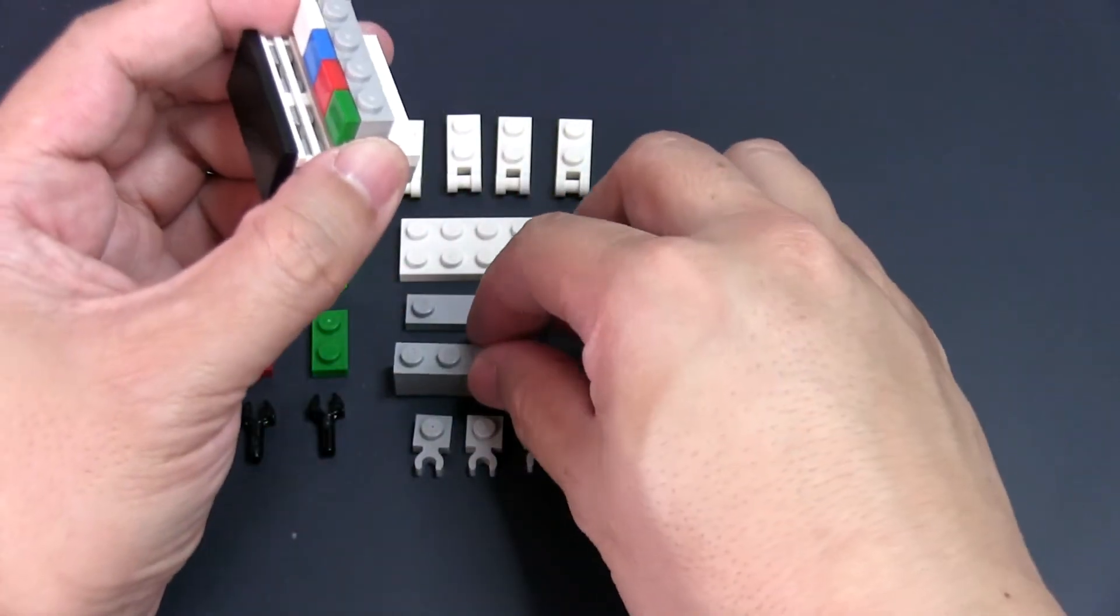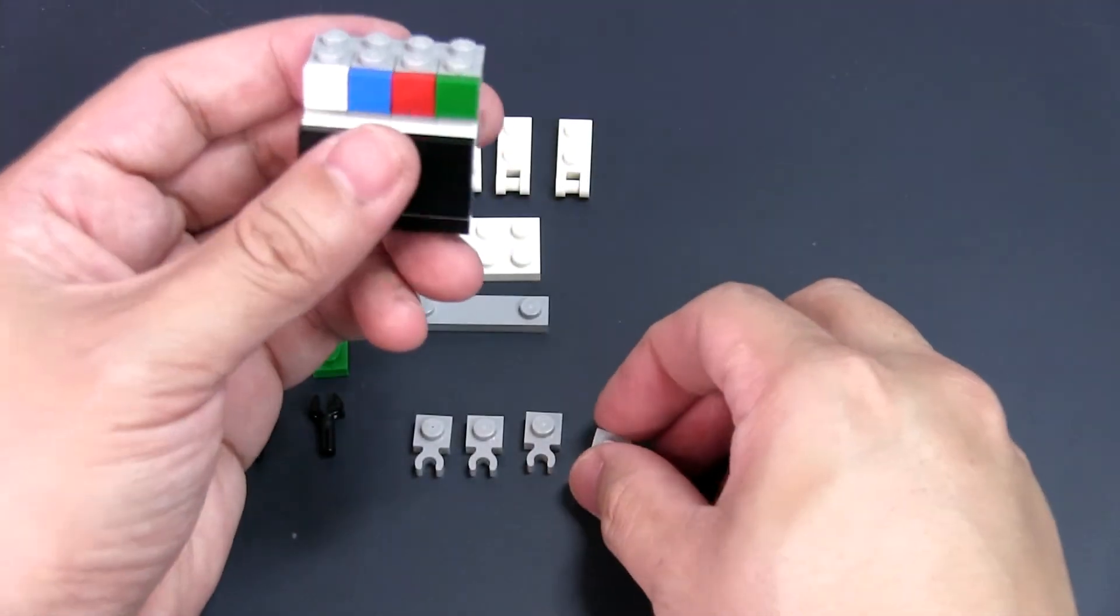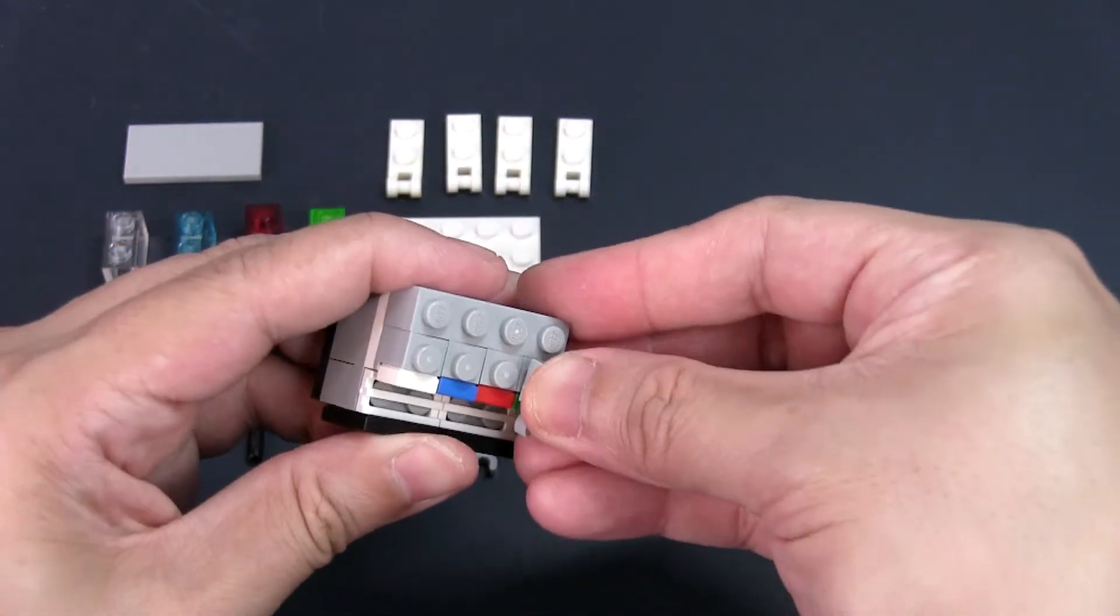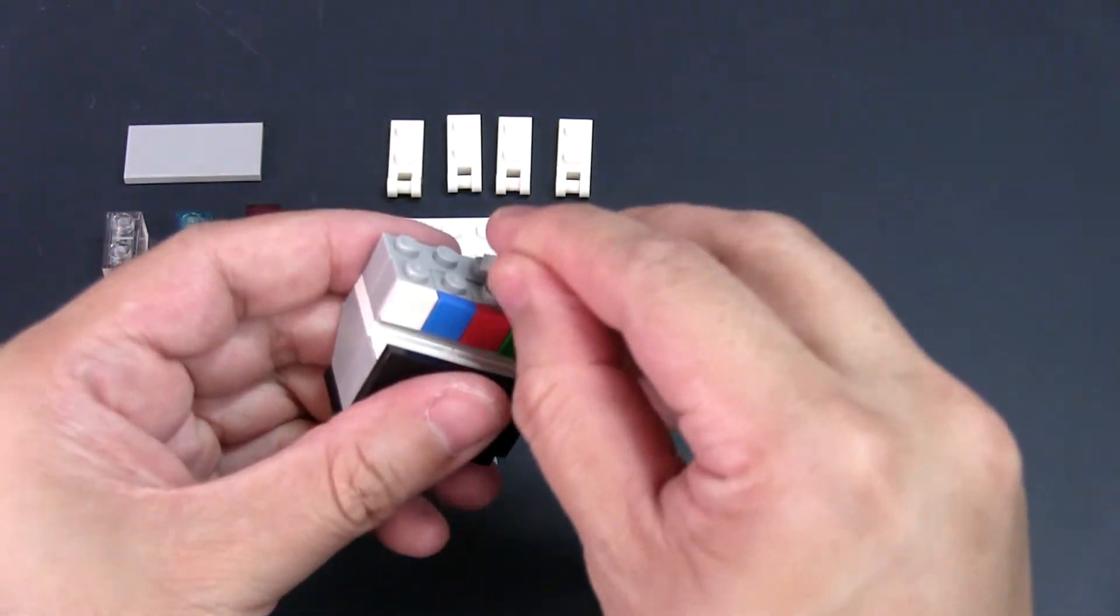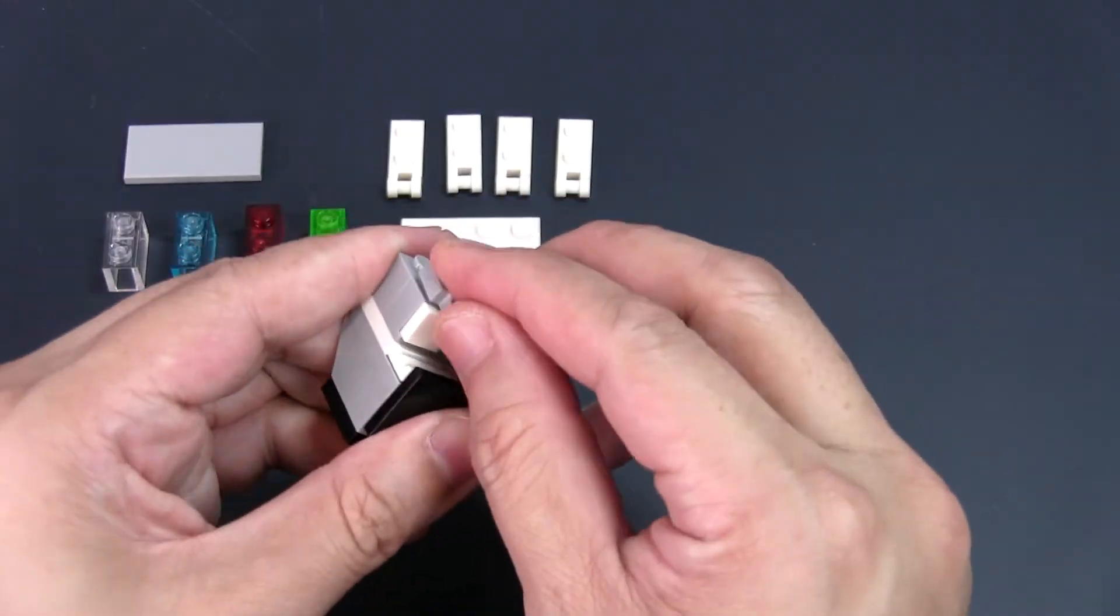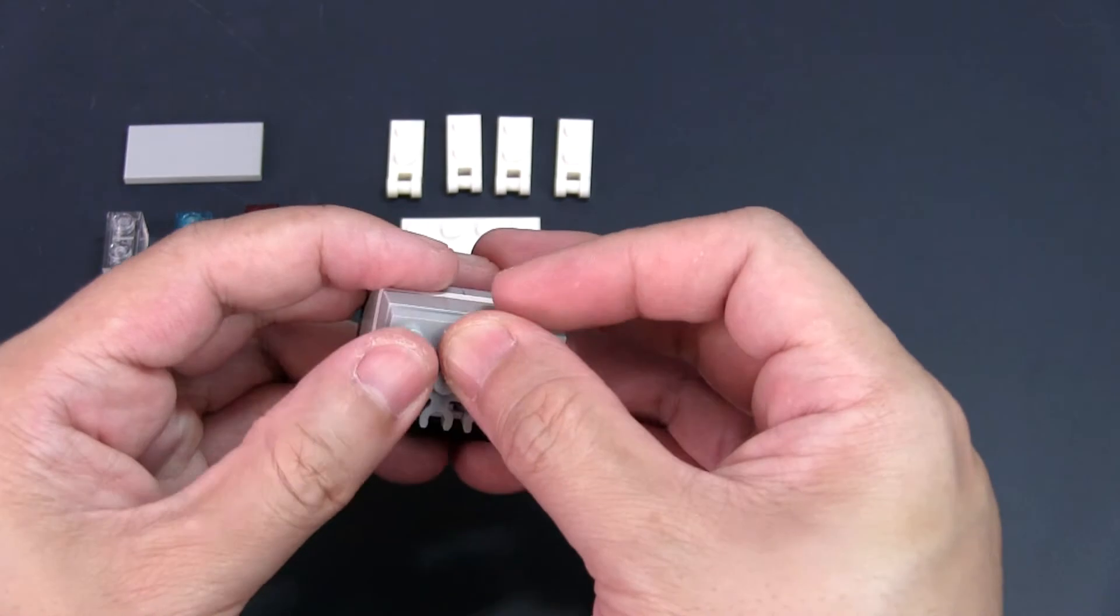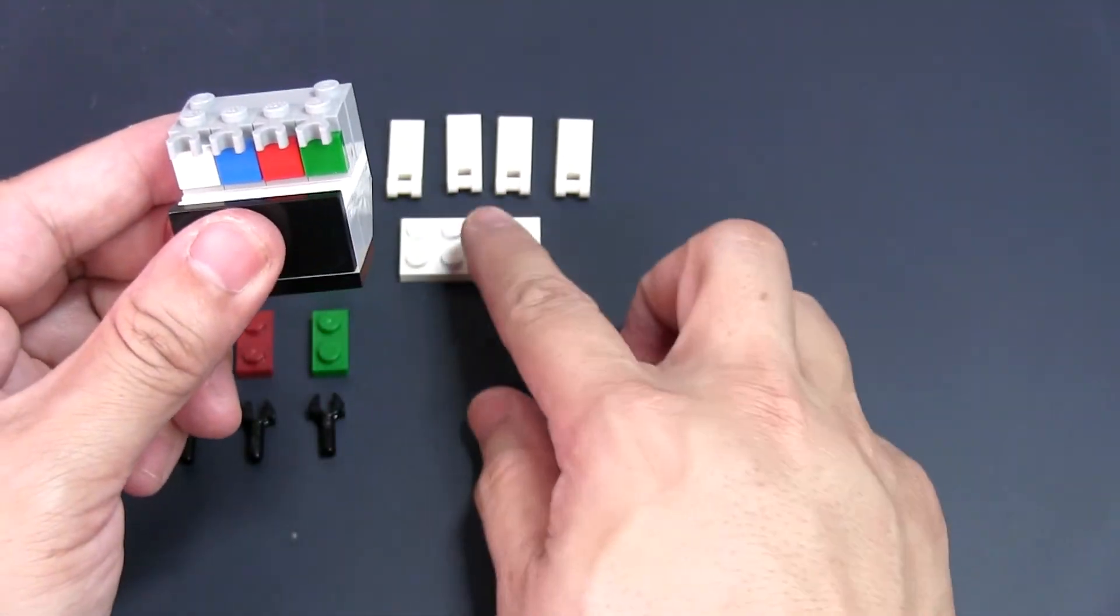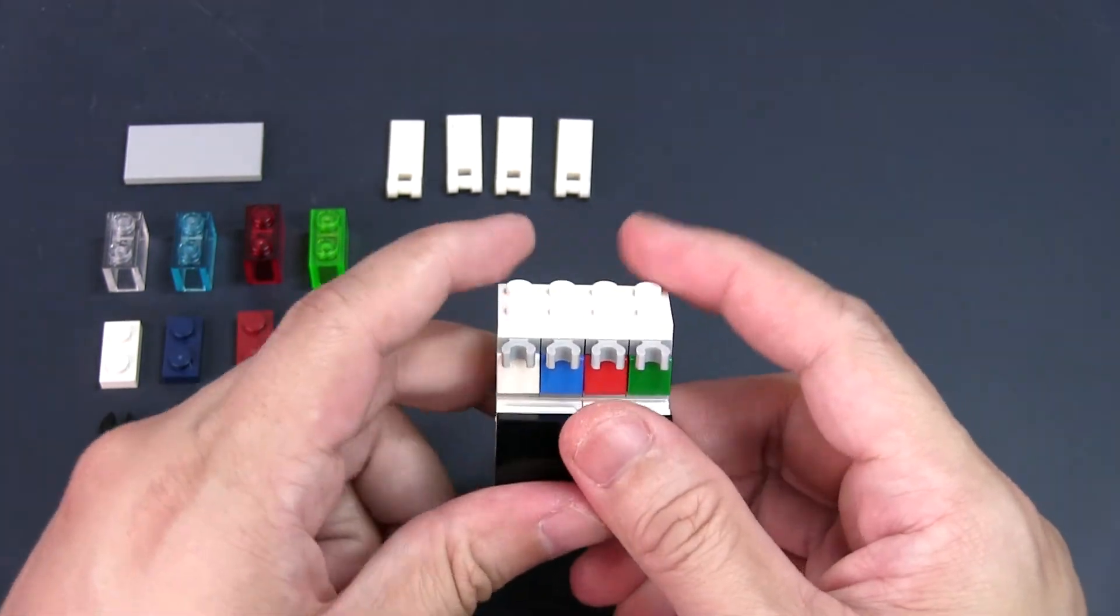Take the 1x4 brick and place it behind the color bricks and place one modified plate with the clip in front on each of the colored bricks. These clips will represent the nozzles that the soda will come out from when dispensed. Take the 1x4 jumper plate or 1x4 regular plate and place it behind so everything is level. Take the remaining 2x4 plate and place it on top.